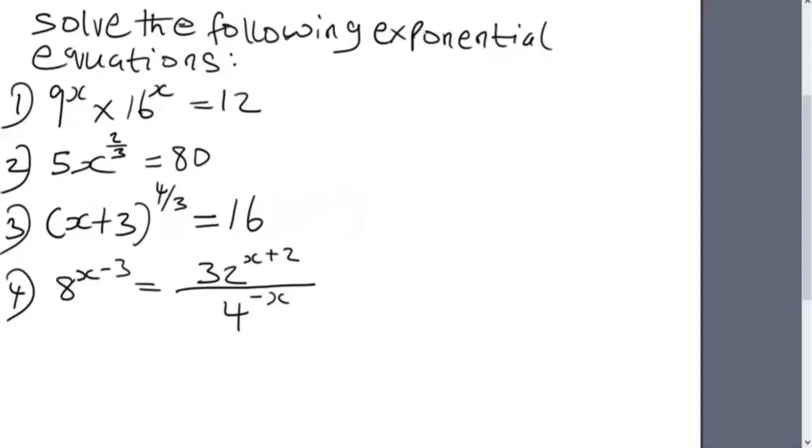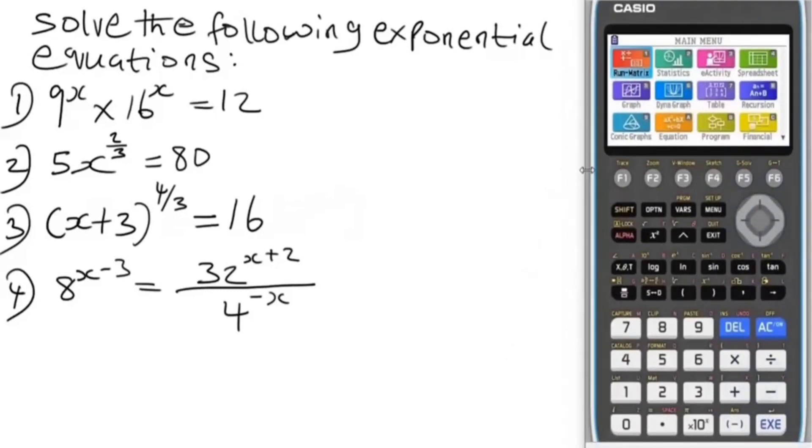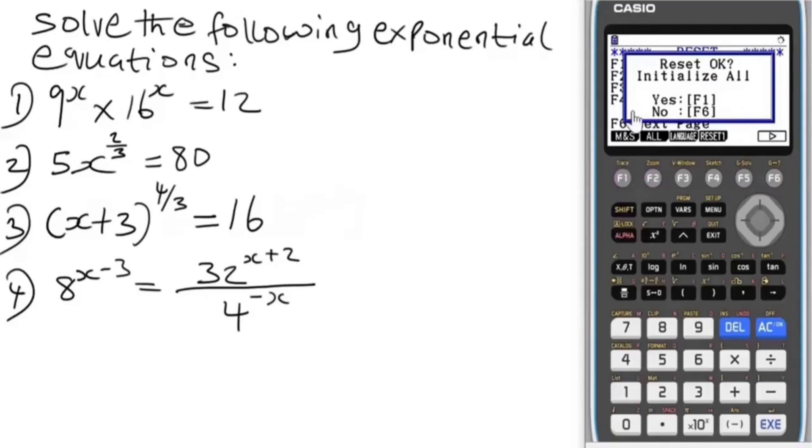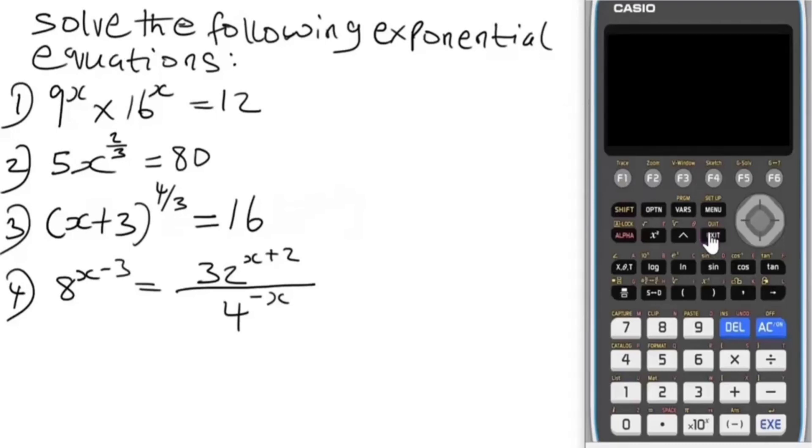This is the Casio FX-CG50 graphical calculator. First we're going to reset the calculator to wipe out previous values. Navigate to the System menu using this navigation button. Press F5 for Reset, then F6 for next page, then F2 to Initialize All, then F1 and it will begin to initialize.